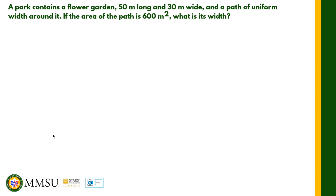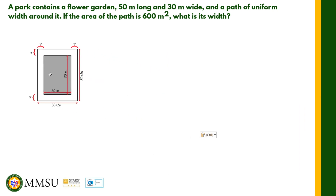Weber Park contains a flower garden 50 meters long and 30 meters wide, and there is a path of uniform width around it. If the area of the path is 600 square meters, what is its width? So we have a park 50 meters by 30 meters, and then there's a constant-width path around it. Let us draw the figure.